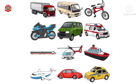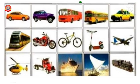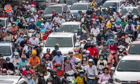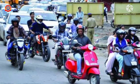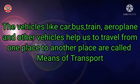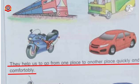All of you look at this picture. Can you tell me what do you see in this picture? Yes, very good — different types of vehicles. Do you know the use of these vehicles? Yes, very good. These vehicles help us to travel from one place to another place. Vehicles like car, bus, train, aeroplane, and other vehicles by which we travel from one place to another place are called means of transport.